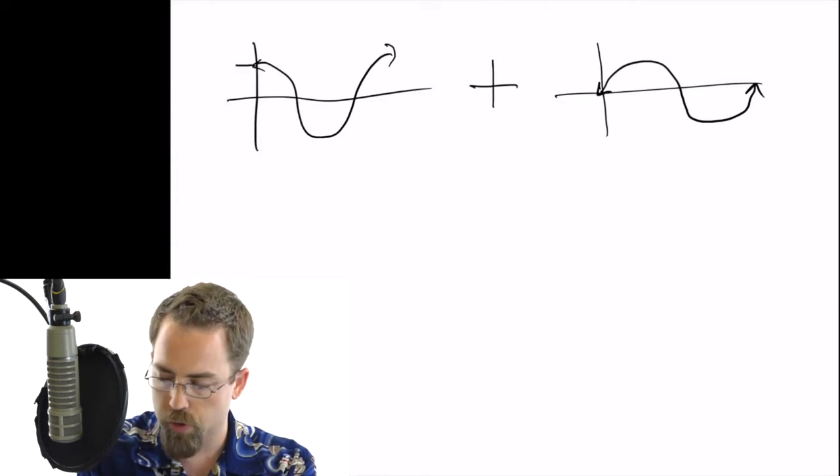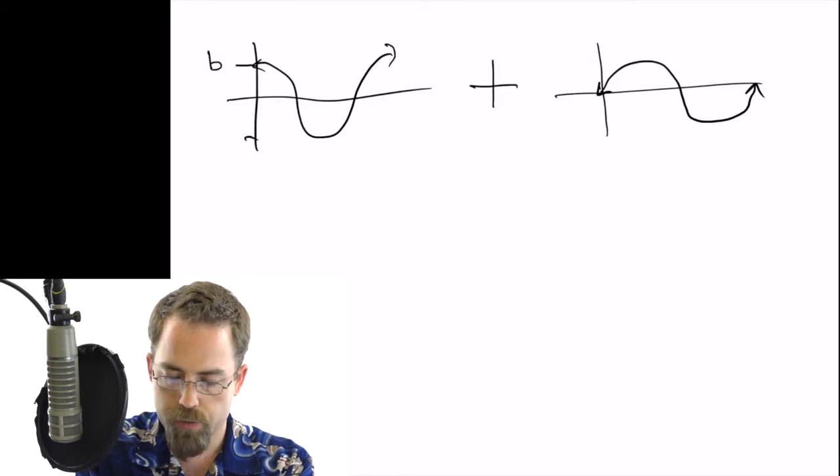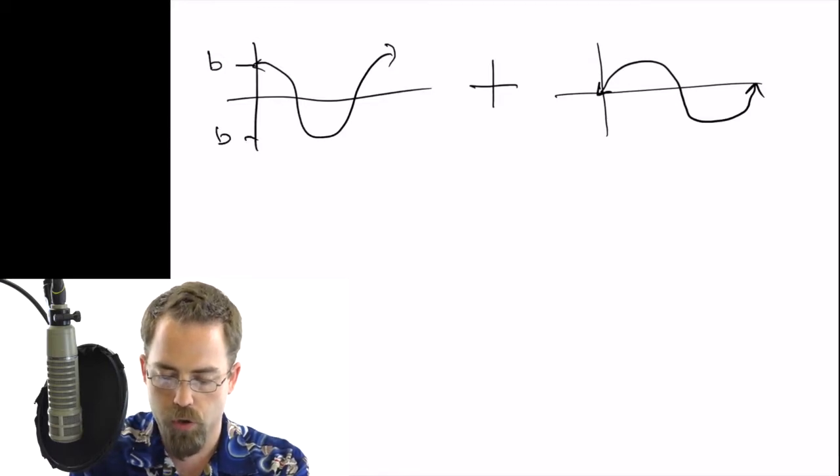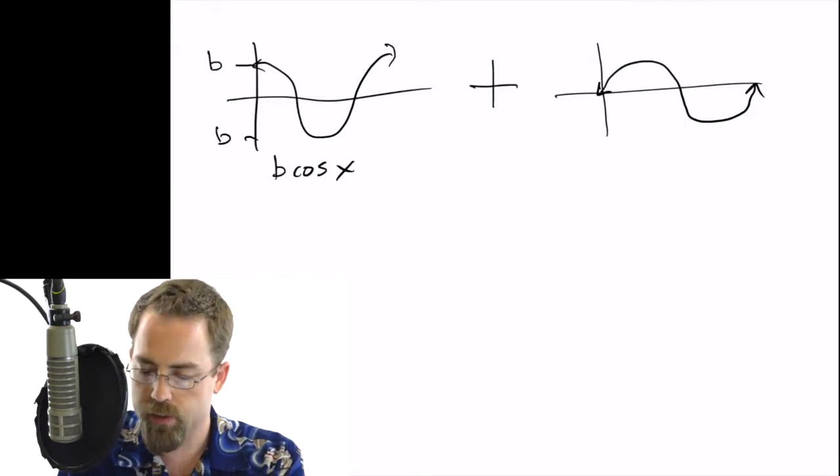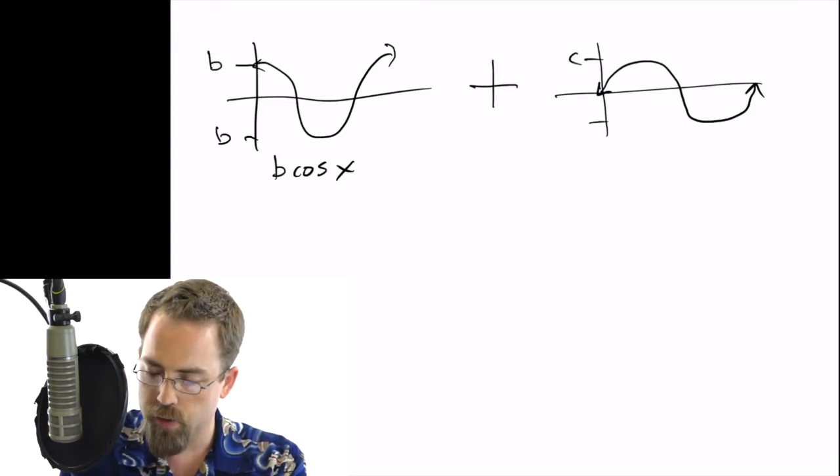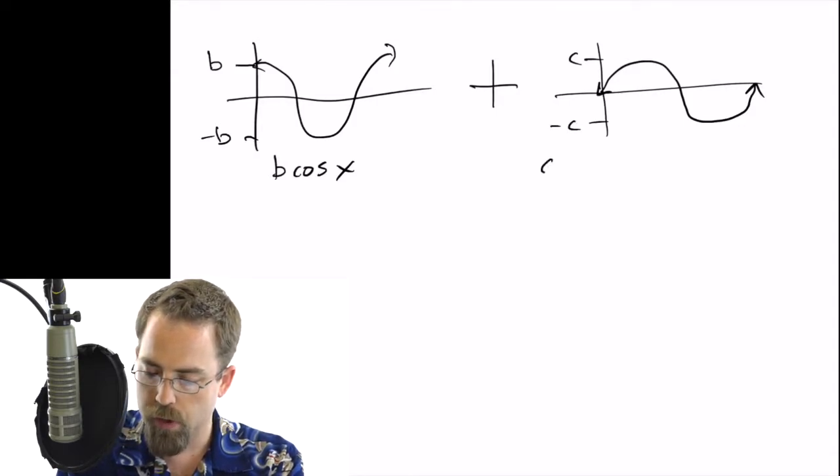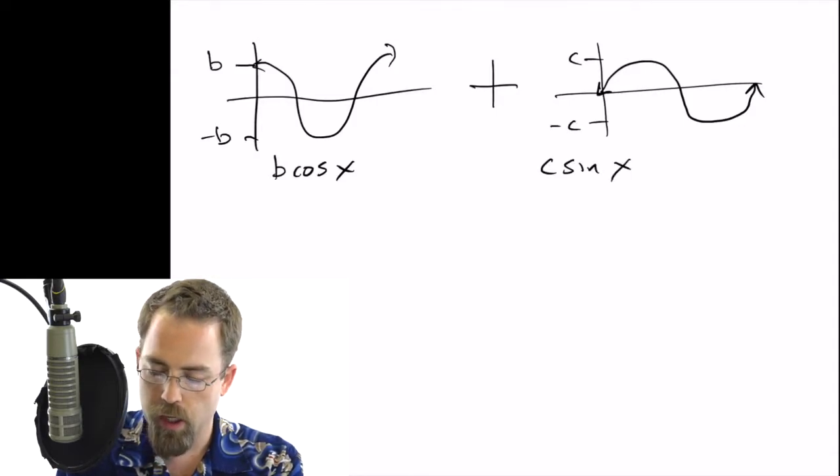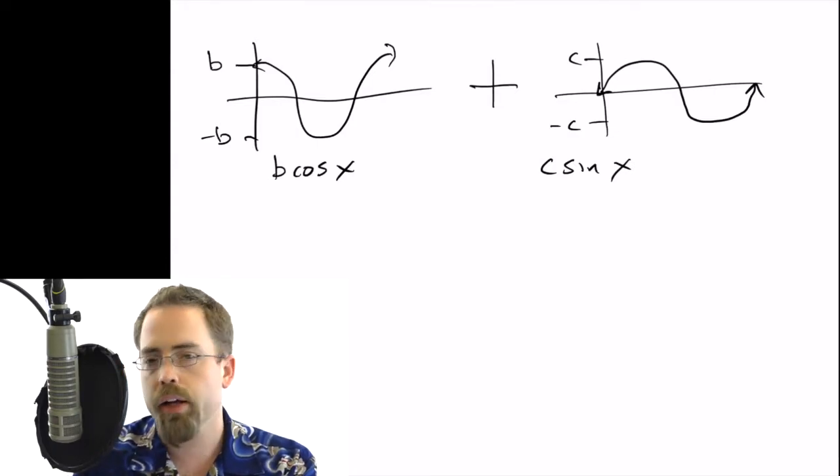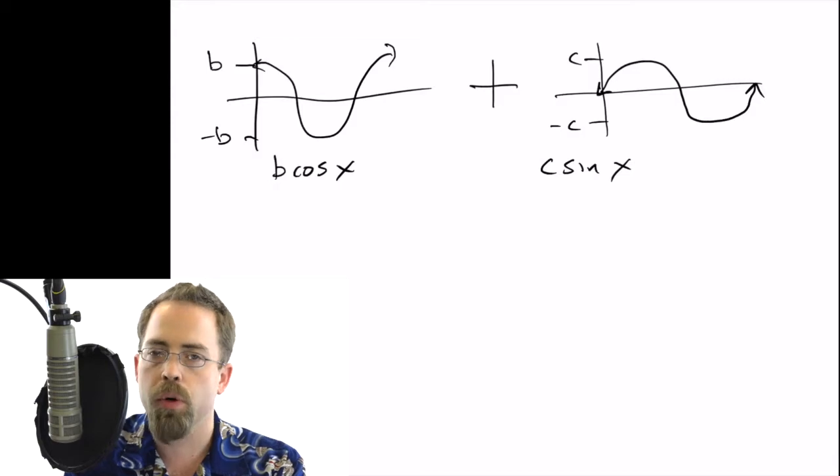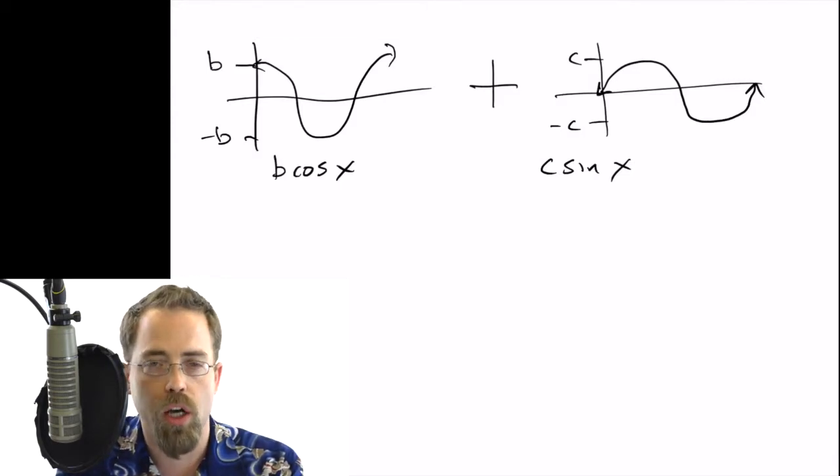But they do have an amplitude. There is going to be some kind of height b for this cosine wave. And then there's going to be some height c for this sine wave. So that's going to be c sine x. So now how do we add these together? Well, like you will prove in the homework, they will make a cosine wave.